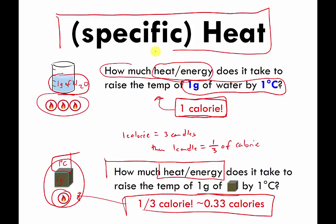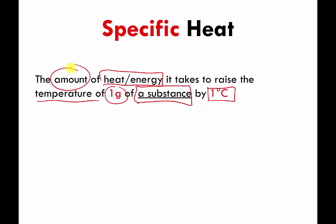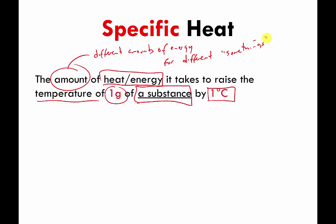So we've now introduced — even though I didn't announce it — the topic of specific heat. Specific heat is going to be defined on the next page. It's the amount of energy or heat that it takes to raise the temperature of one gram of something by one degree Celsius, and it will be different amounts of energy for different materials.